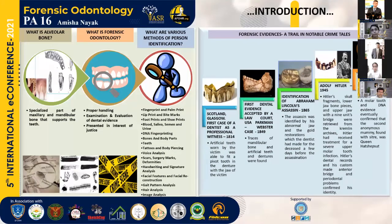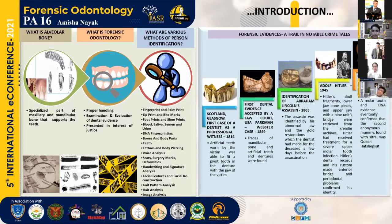What is alveolar bone? Alveolar bone consists of an outer corticular bone filled with spongy bone inside, along with the Haversian canals and trabeculated bone when viewed microscopically. Forensic odontology is the analysis of dental evidence, and there are various methods of person identification.